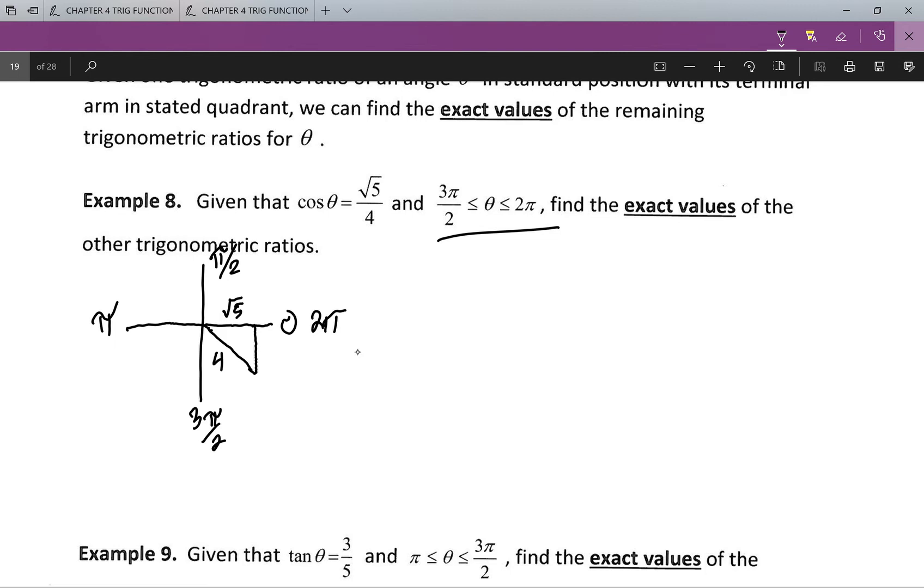Now the next piece I have to look at is I need to find out what my y value is going to be. So it's just going to be the square root of 4 squared minus root 5 squared, which would equal the square root of 16 minus 5, which would equal the square root of 11.